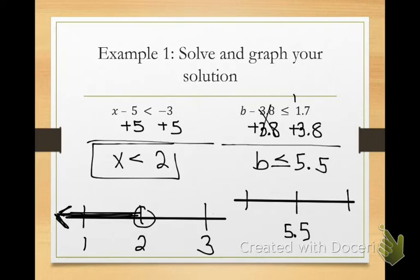So, just because your solution is a decimal doesn't mean that you have to use decimals on the left and right. So, we could say 5 and 6. Would it be an open or a closed dot? Closed. And, is my arrow going to the left or right? Left. It's going left. Very good.